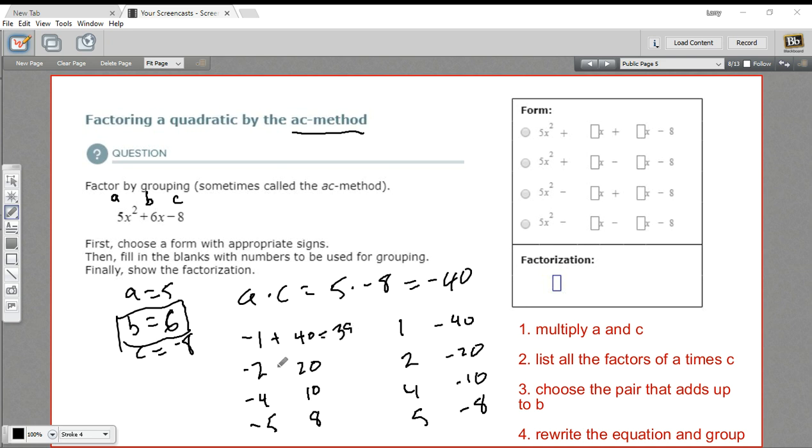So if we're adding these, negative 2 and 20, that's 18. Negative 4 and 10, oh, there we go. We've got a positive 6. So that's the one that adds up to positive 6.